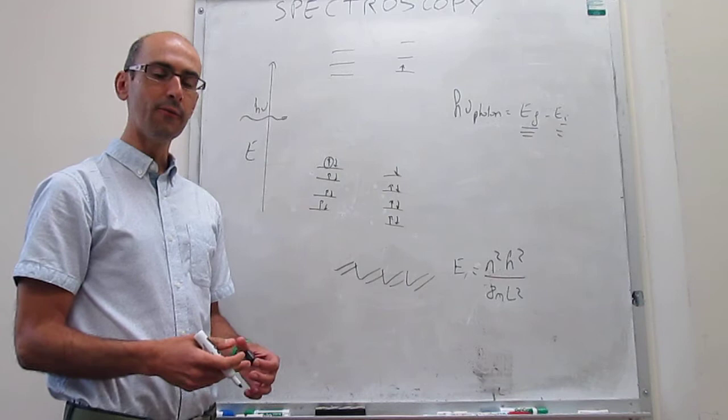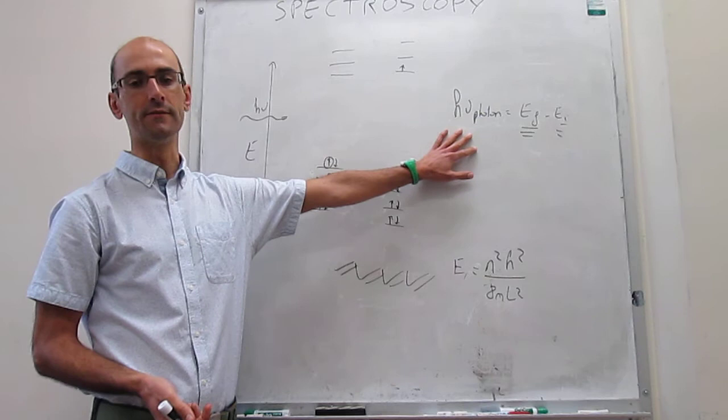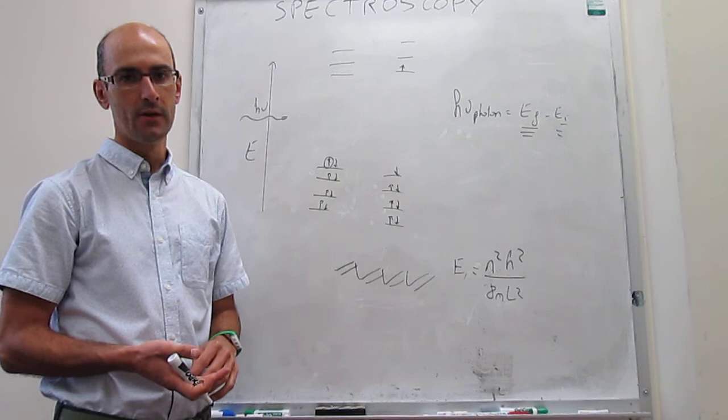For polyenes, we can predict quantitatively the wavelength or frequency of the photon you need to shine on the molecule.